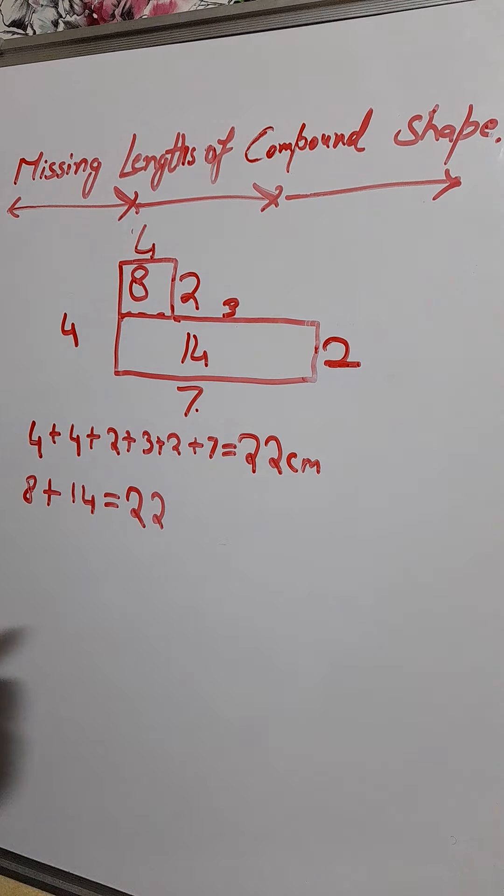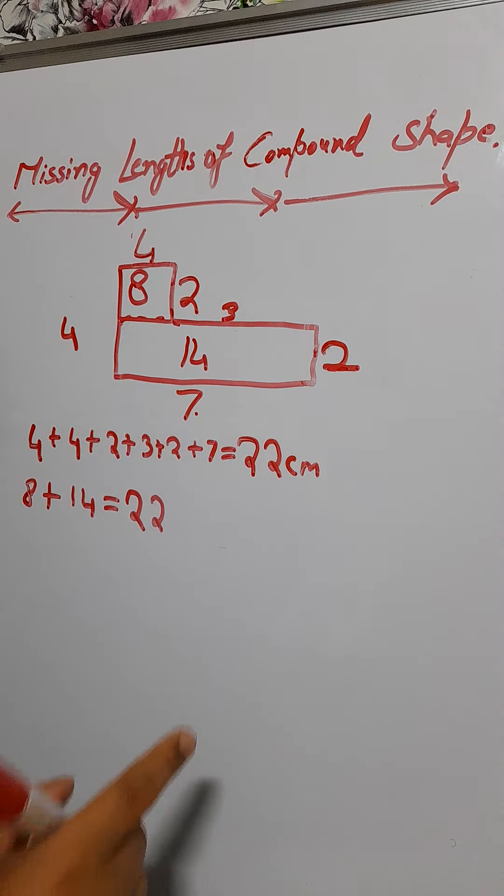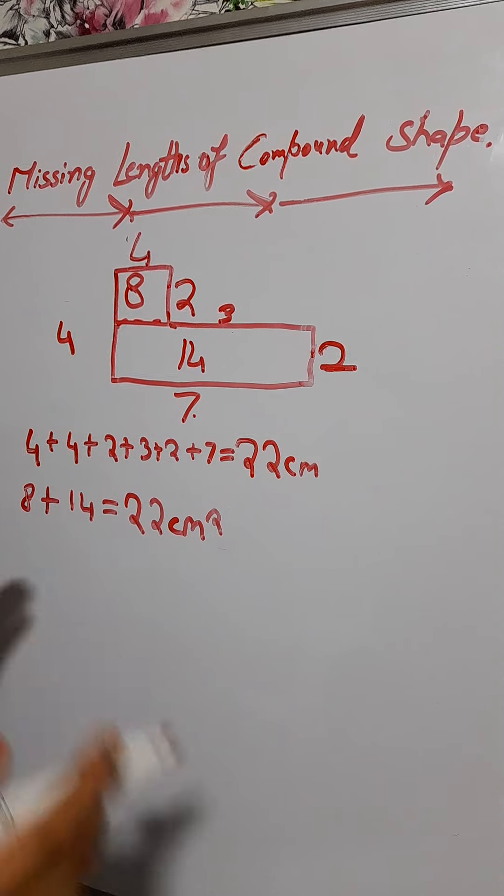Now we add the two areas together: eight plus fourteen equals twenty-two. This is twenty-two centimeters squared — we use centimeters squared, not centimeters, because we're measuring area. That's how you find the missing lengths of a compound shape and then find its perimeter and area. Thanks for watching — please like and subscribe to my channel!